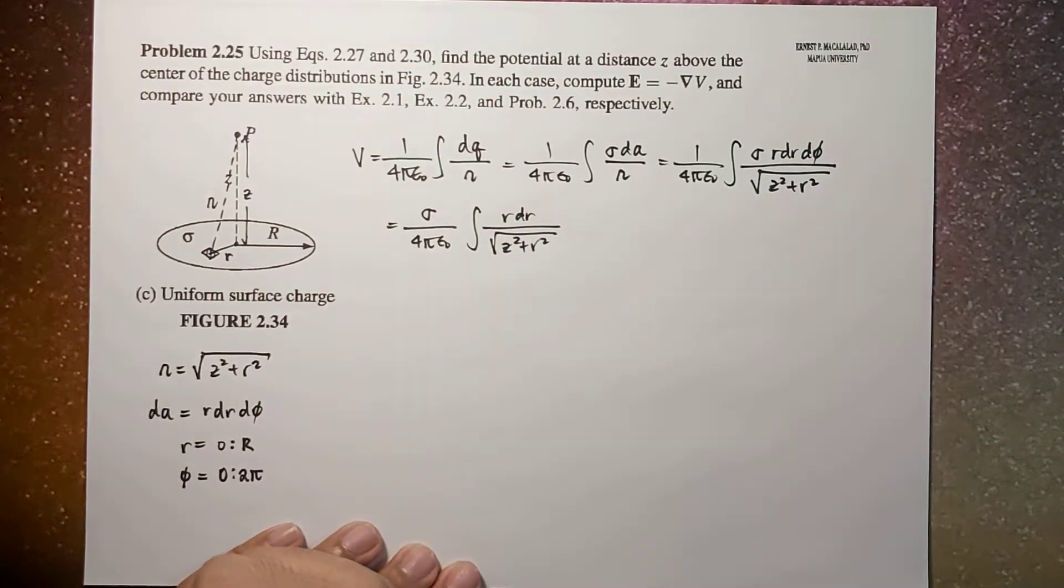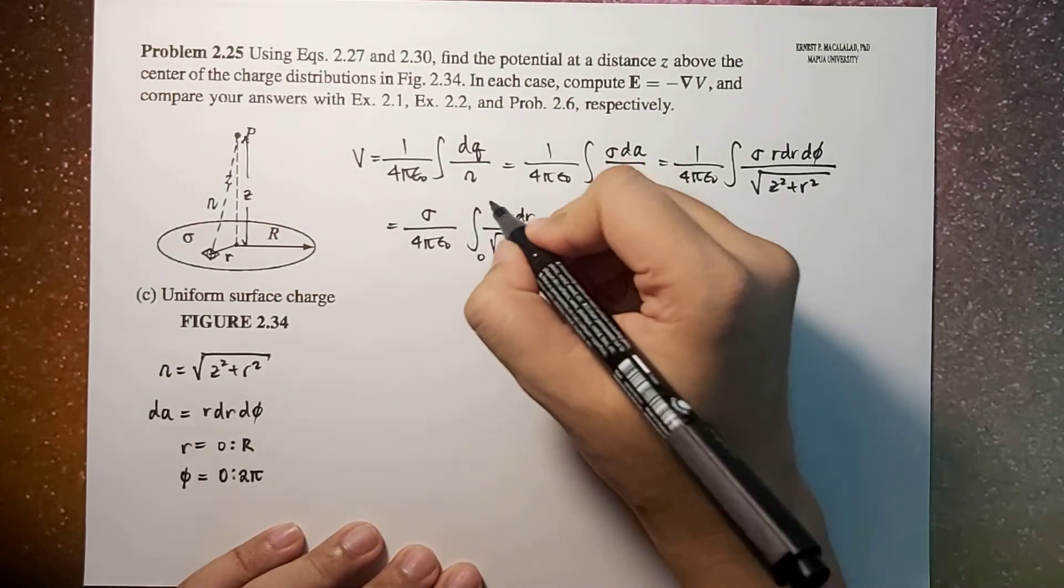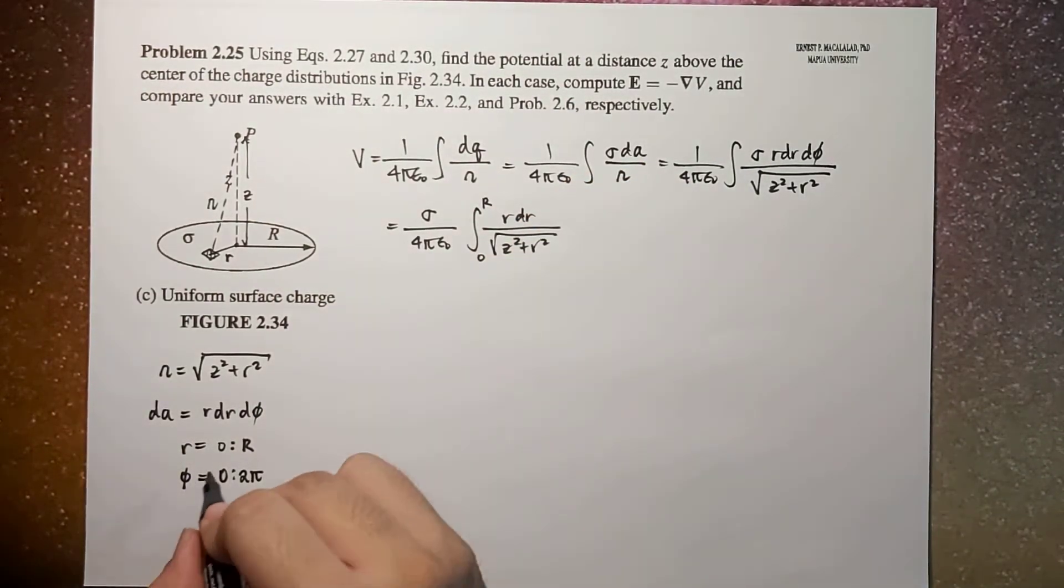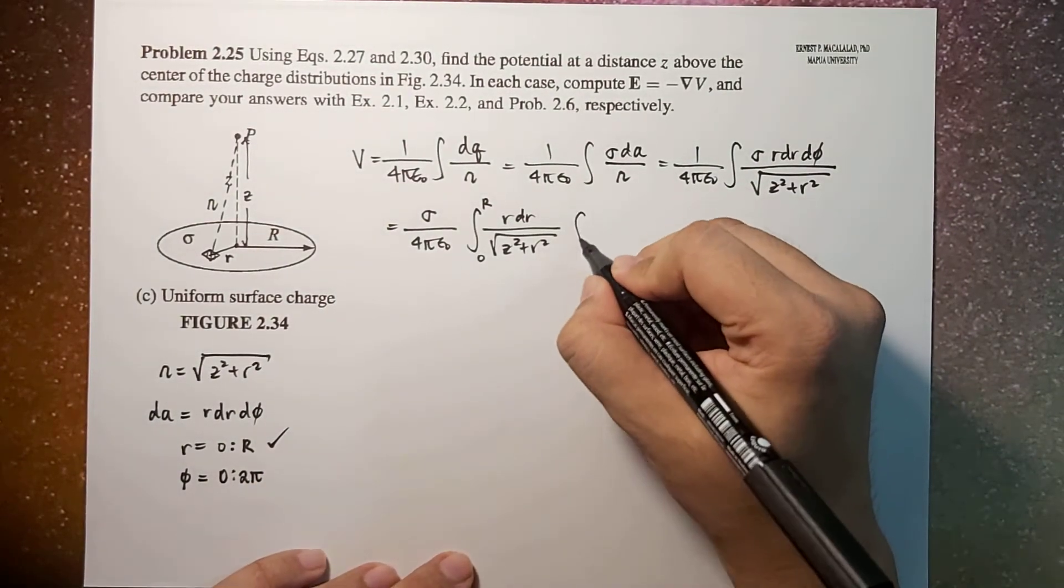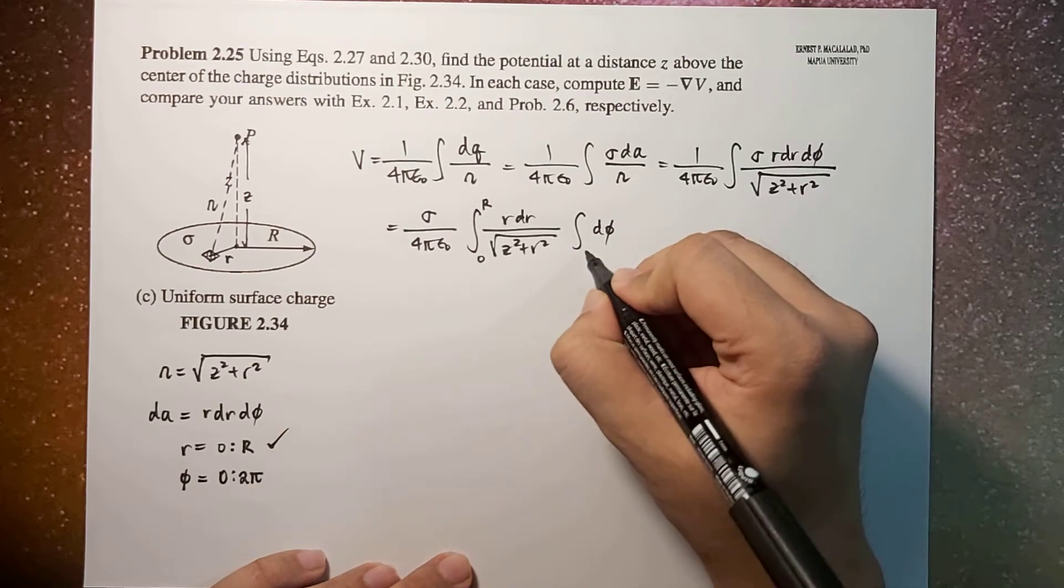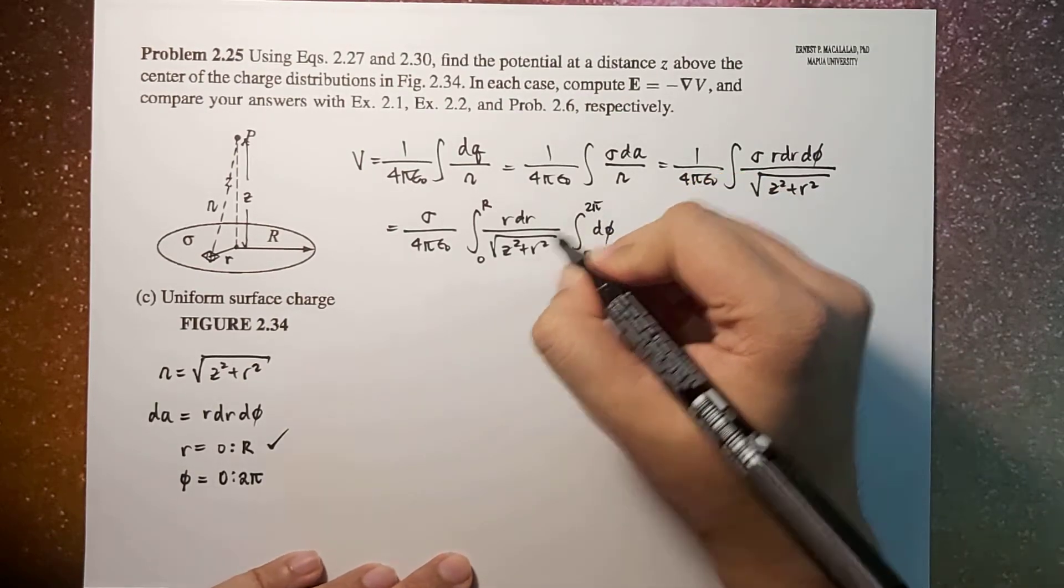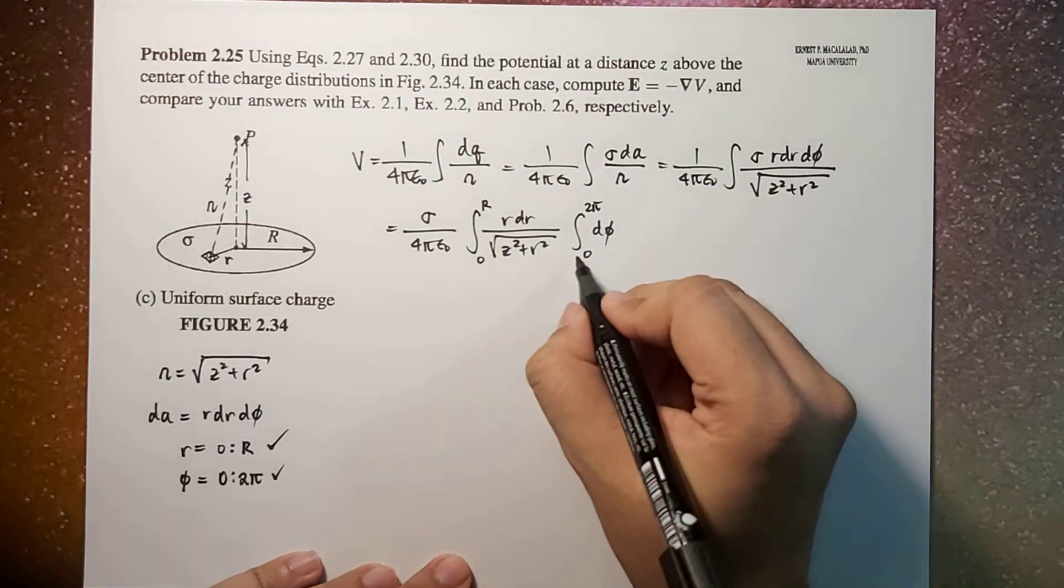z squared plus r squared integrated from 0 to r, and integral of dφ integrated from 0 to 2π. This is 2π.